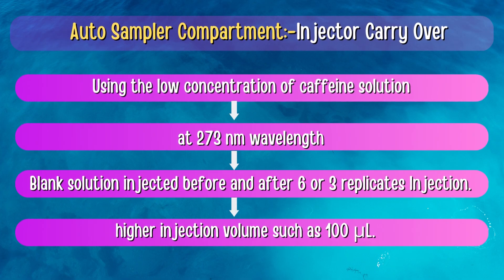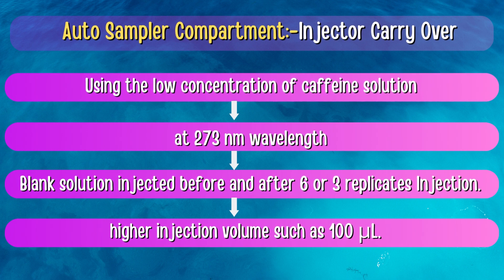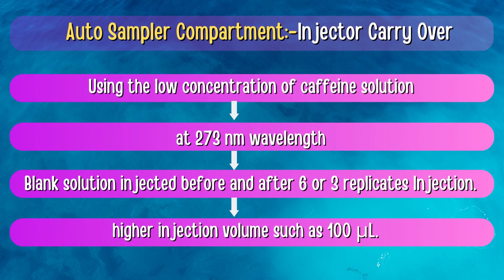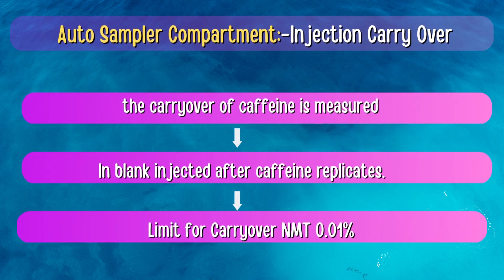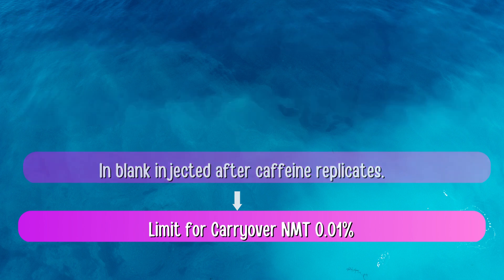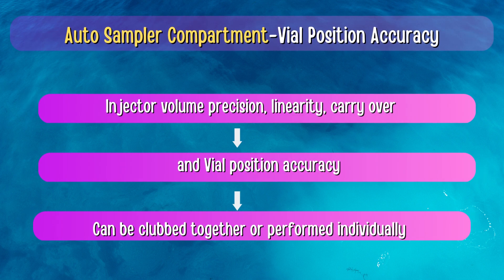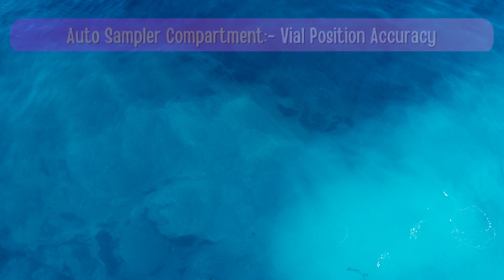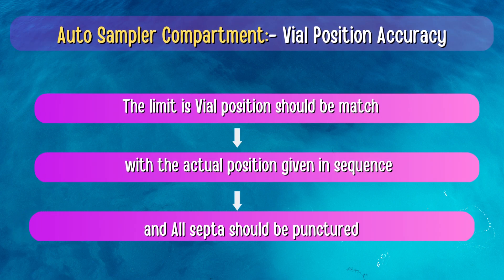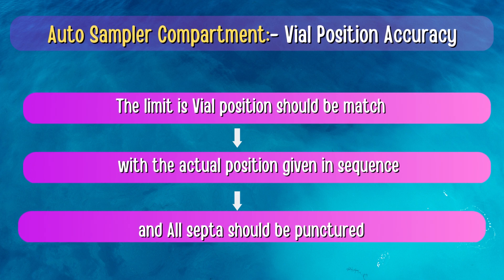For Injector Carryover, a known low concentration of caffeine standard solution at 273 nm is used. A blank solution is injected before and after 6 or 3 replicate injections at higher injection volume such as 100 µL. The carryover of caffeine is measured in the blank injected after caffeine replicates. The limit for carryover should not be more than 0.01%. Injector Volume Precision, Linearity, Carryover, and Vial Position Accuracy can be clubbed together or performed individually. The limit for Vial Position is that the position should match the actual position given in the sequence and all septa should be punctured.